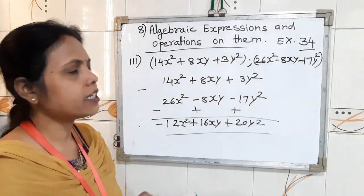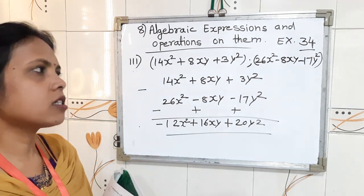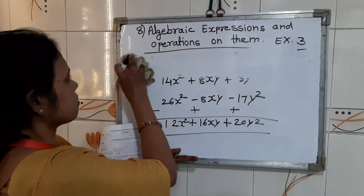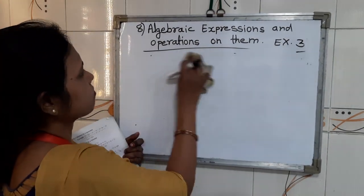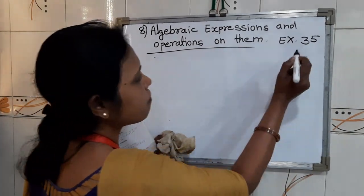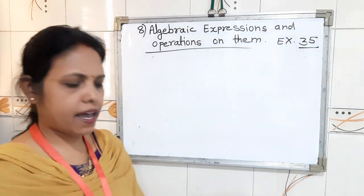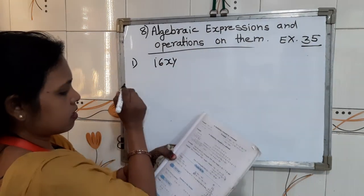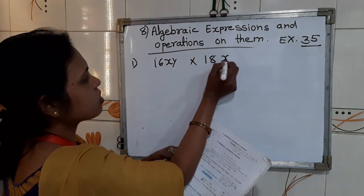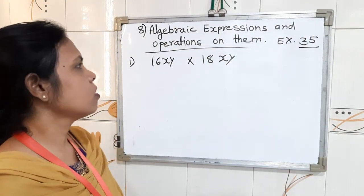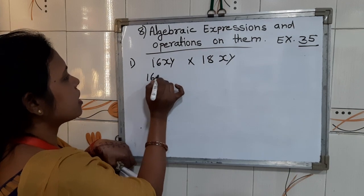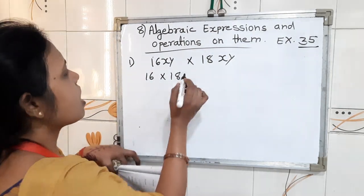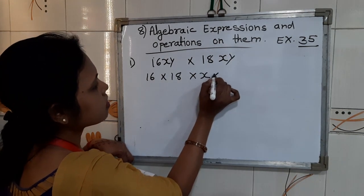So children, I hope you understood exercise 34. Now we are going to move to exercise 35. In exercise 35, multiplication is given. Question number first: multiply 16xy into 18xy. So children, first we write the numbers together: 16 into 18, then x into y into x into y — multiplication of all terms.